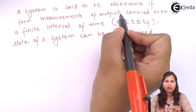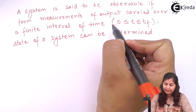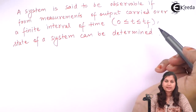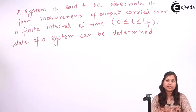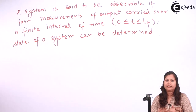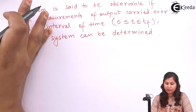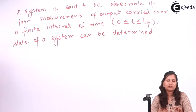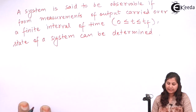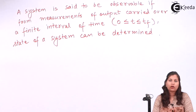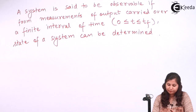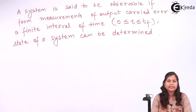A system is said to be observable if, from measurements of the output carried over a finite interval of time, the state of a system can be determined. Externally, we can observe all the states of the system. If some of the states cannot be measured and observed externally, it shows that some of the states are shielded from observation or cannot be measured. These were the definitions of observable and controllable systems.